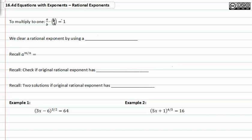We clear a rational exponent by using a reciprocal exponent. Remember that if you have a^(m/n), you can rewrite that as the nth root of a^m, where m is the exponent.